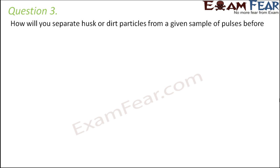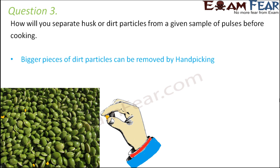Question number 3: how will you separate husk or dirt particles from a given sample of pulses before cooking? When it comes to husks, they are lighter in weight, so you might separate them by winnowing. But dirt particles may be bigger or smaller in size yet as heavy as the pulses, so winnowing won't help for dirt. Bigger pieces of dirt are best removed by hand-picking, since they are easily visible and can be picked out from the pulses.